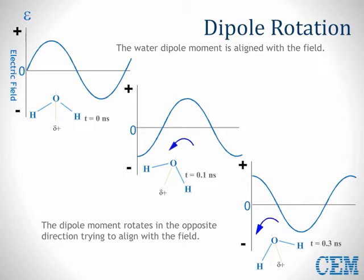But the field keeps rapidly moving, causing the molecule to rotate back and forth continuously. Since we are in a liquid state, molecules are packed fairly tight together, so this rotation causes them to bump into each other. This causes friction, which causes rapid heating.